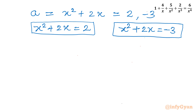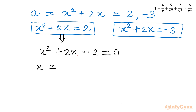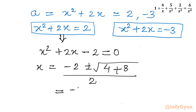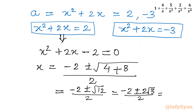For the first equation, x squared plus 2x minus 2 equal to 0, applying the quadratic formula gives: x equals minus 2 plus or minus square root of (4 plus 8) over 2, which is minus 2 plus or minus square root of 12 over 2. Since root 12 equals 2 root 3, this simplifies to x equals minus 1 plus or minus root 3. These are real solutions, so they are accepted.